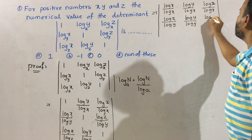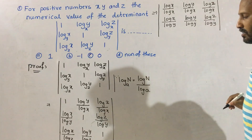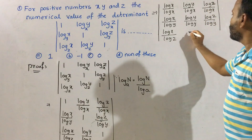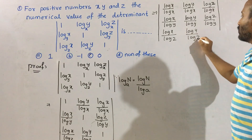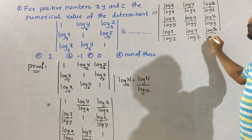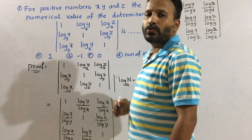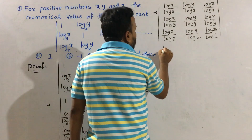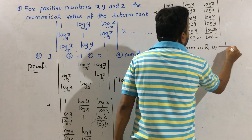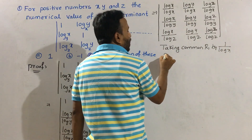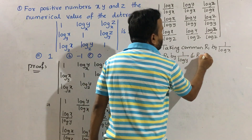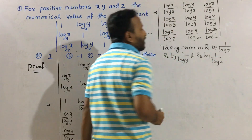For row 3, log z divided by log z equals 1. Taking common factors: take 1 by log x from row 1 (r1), 1 by log y from row 2 (r2), and 1 by log z from row 3 (r3).